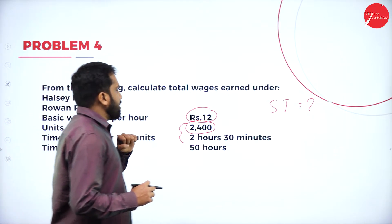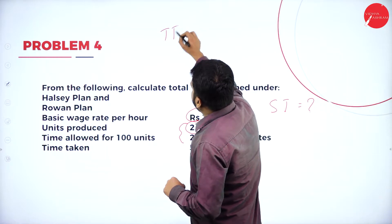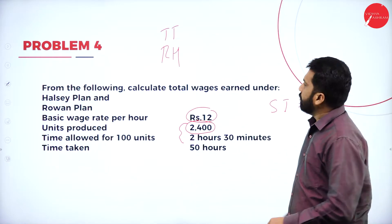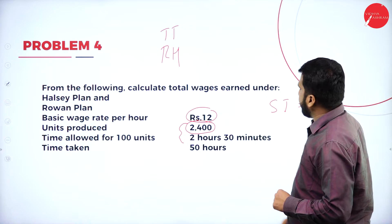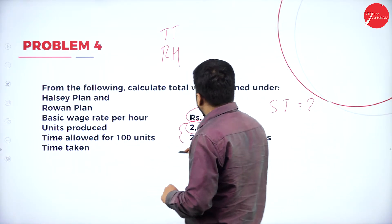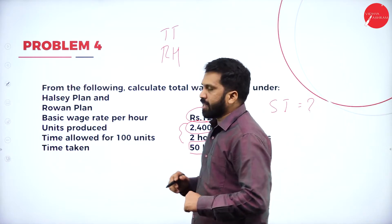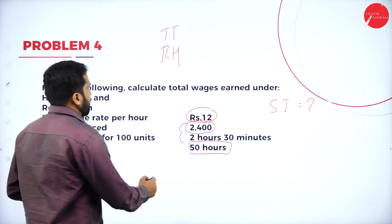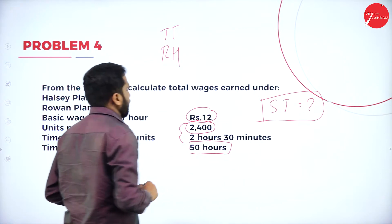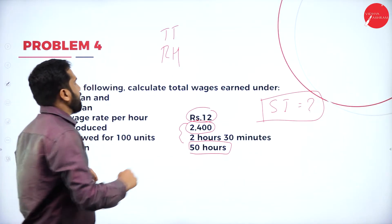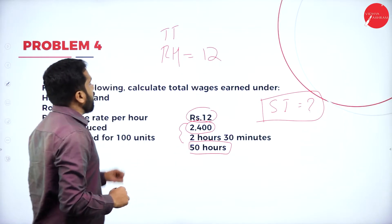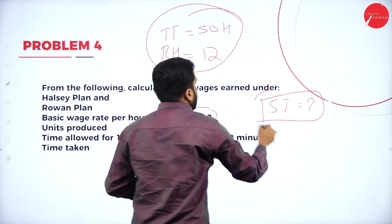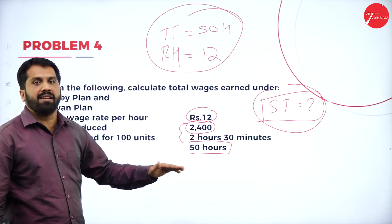Now let's set up the working note. Time taken is 50 hours. Standard time is not given — it is a question mark. The hourly rate is 12 rupees. These are the known values. If we determine the standard time, the problem will be solved.